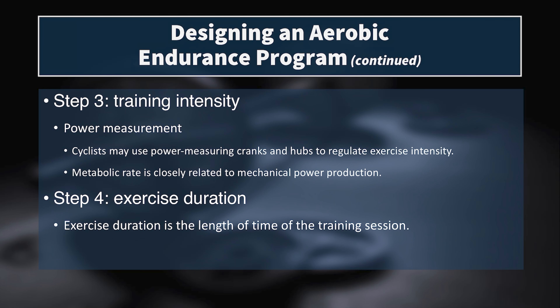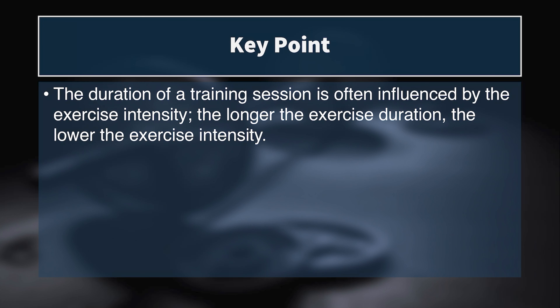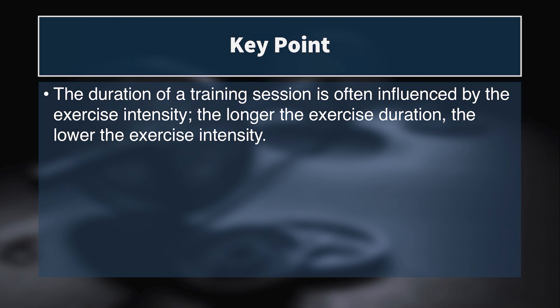Step four is exercise duration—the length of the training session. Duration is always influenced by exercise intensity: the longer the duration, the lower the intensity must be, and vice versa. If prescribing 100-meter sprint repeats, you can't accumulate much volume. If you send an athlete out for a two-hour run, they must stay well below their lactate threshold.